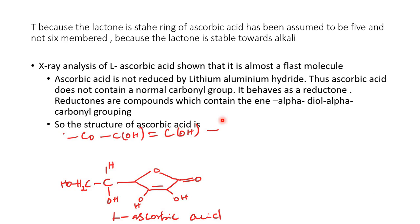The ring of ascorbic acid is five-membered, not six-membered, because it is stable towards alkali. X-ray analysis of ascorbic acid shown that it is almost a planar molecule. Ascorbic acid is not reduced by lithium aluminum hydride. Thus, ascorbic acid does not contain a normal carbonyl group. It behaves as a reductone. What are reductones? Reductones are compounds which contain the enol-alpha-diol-alpha-carbonyl grouping. So the structure of ascorbic acid contains this type of structure: carbonyl and hydroxyl and then with a double bond and then carbon attached with hydroxyl group. This type of structure exists in the structure of ascorbic acid.